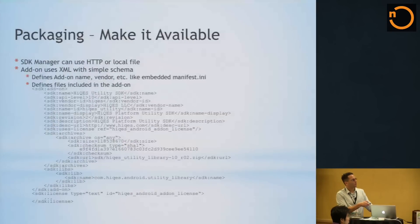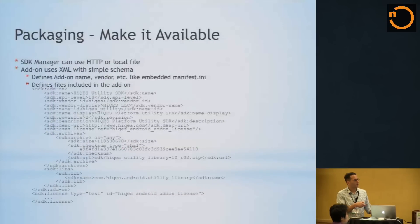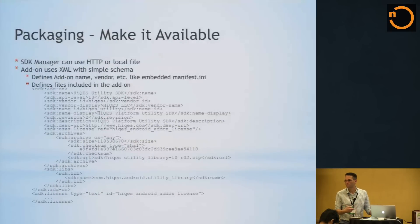The default build system doesn't have an automatic way of generating this XML for you, so once you have the zip file you have to write this XML manually. You specify the exact size of the SDK add-on, a SHA-1 hash used as a checksum, the exact filename relative to the XML file on the server. There's also a libs section that lists the fully qualified domain name of what's in there.